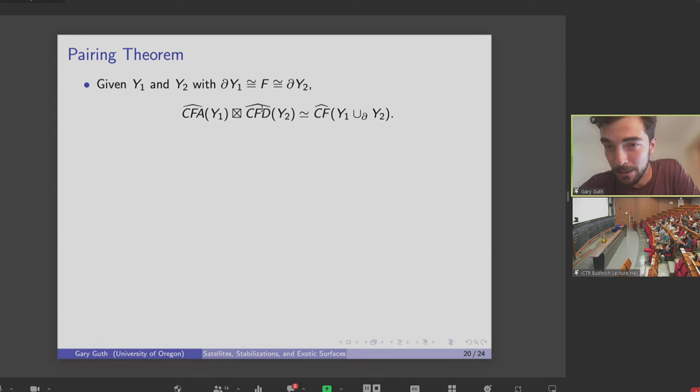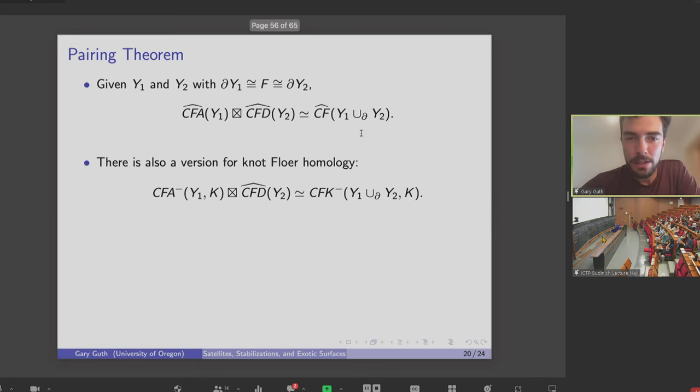And the really powerful thing about bordered Heegaard Floer homology is that if I have two three manifolds with common boundary, I can glue them together. And if I want to know what chain complex of this glued three manifold is, that's homotopy equivalent to this derived tensor product of CFA hat of the first thing, tensor CFD hat of the second. And there's a version of this pairing theorem for knot Floer homology as well. If I just think of knot K as living in one of these three manifolds with boundary, this box tensor product recovers the knot Floer homology of K living in this glued three manifold.